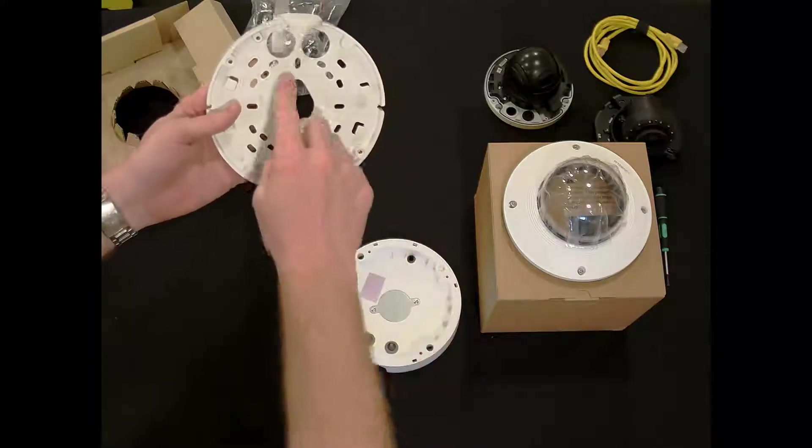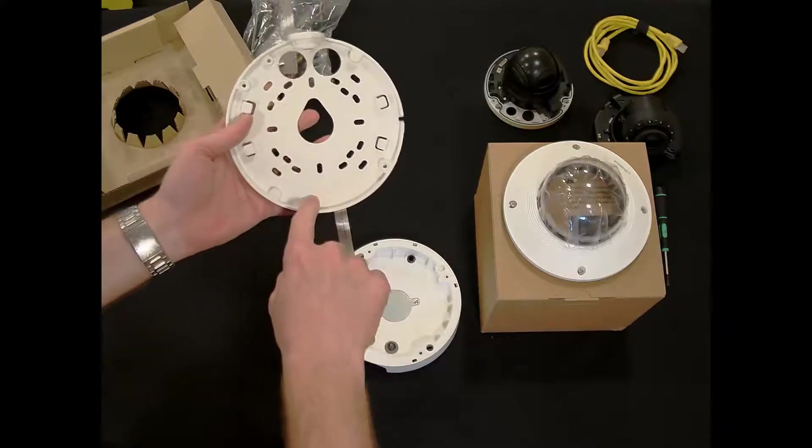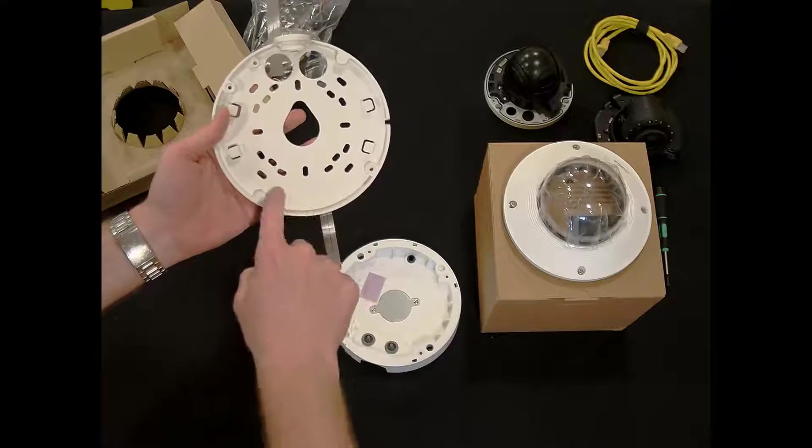You'll see here there's a whole mounting pattern as shown right here. It also shows you single gang, double gang, four inch octagon, and square box as listed right there.